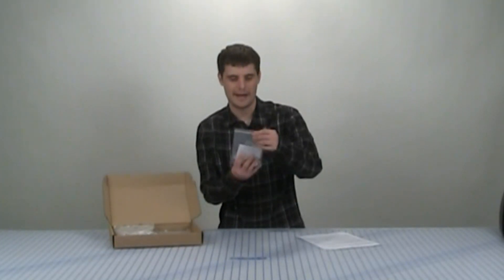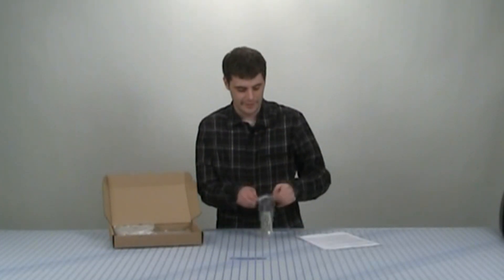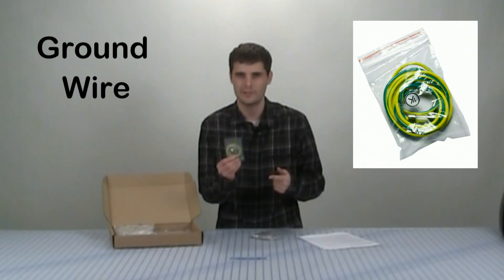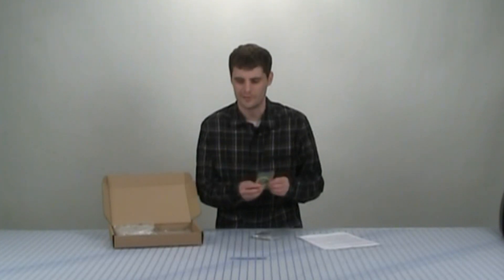As we open it up you're going to see a small little bag here. This bag is going to contain a few items in it. This first one is a green and yellow ground wire. We'll discuss this a little bit later but we're definitely going to want to use this so set this aside.